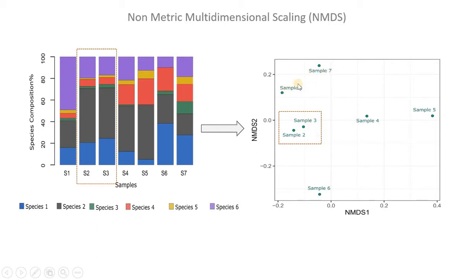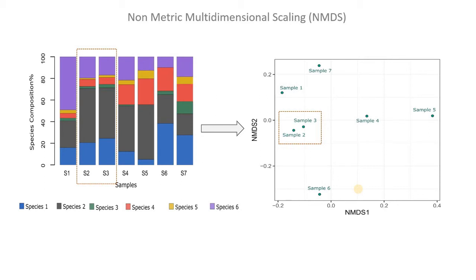That's the basic underlying logic of an NMDS plot. The axes are meaningless — they are just arbitrary, so don't focus on them. If you want to study similarity between samples in terms of species composition, you only need to look at the distance between the sample points. Samples closer together are more similar; that's it.